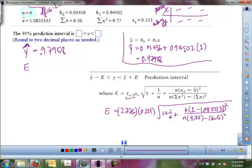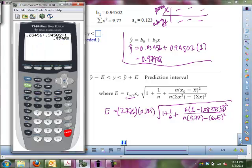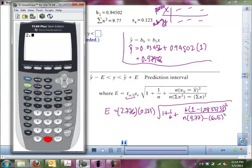So, let's see if we can take our calculator out and try to be meticulous with this input. Alright, so we have a 2.776, and then we have a times, and then we have a .123, and then another times, and now begins our big square root. So, the square root symbol is on top of the x squared bar. So, that's a square root. And then we have a 1, plus 1 over 6. So, that's 1 divided by 6, plus.